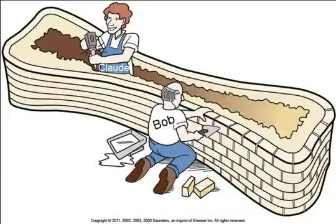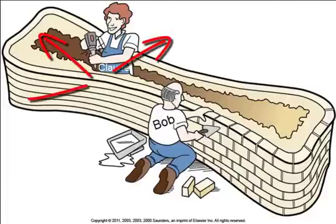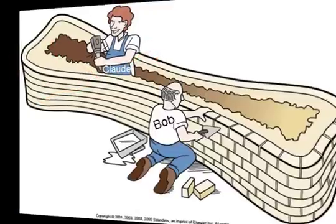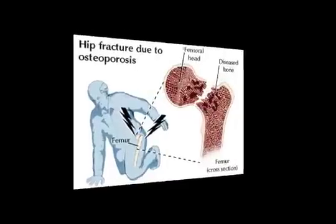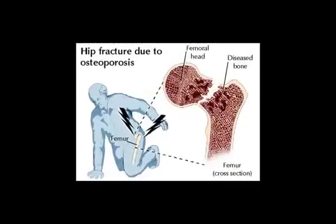Bob is going to be the last one to get the calcium, but Claude is still working away. You end up with bones that aren't very dense, that don't have a lot of calcium in them, and then the patient is at risk for fractures.